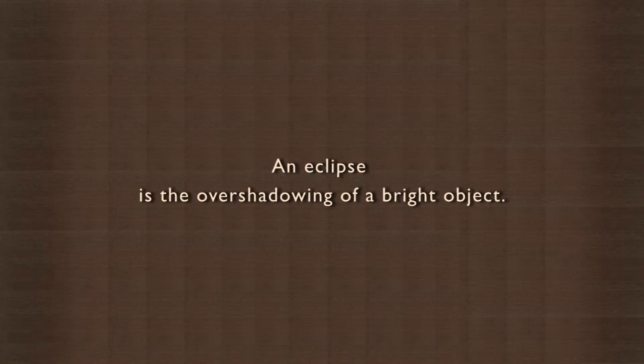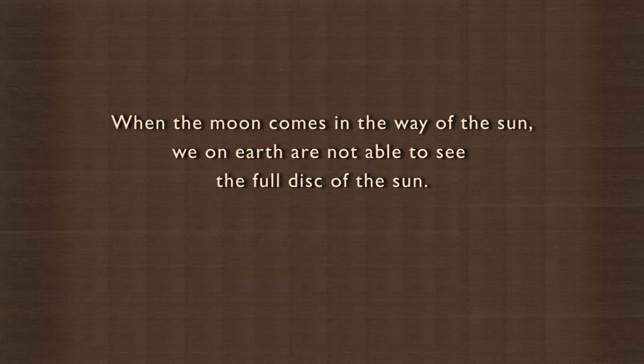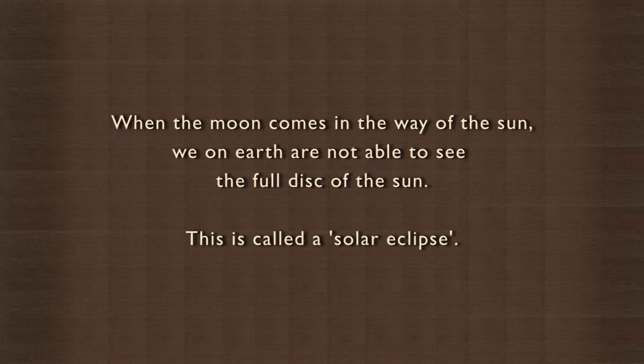An eclipse is the overshadowing of a bright object. When the moon comes in the way of the sun, we on earth are not able to see the full disk of the sun. It is called a solar eclipse.